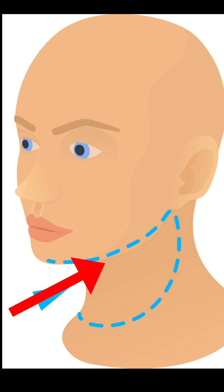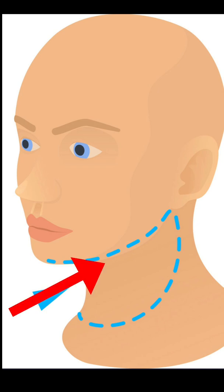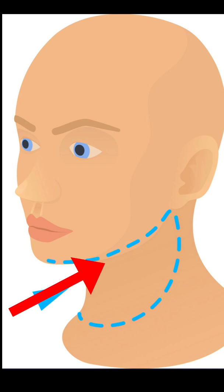It is called torso. Torso means chest, stomach, and back together — called torso. Torso and head are joined by the neck. We can move our head up, down, here and there with the help of neck.